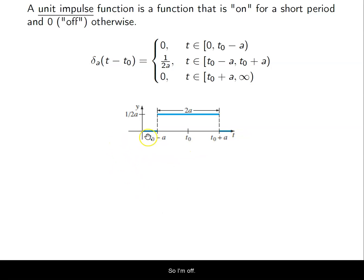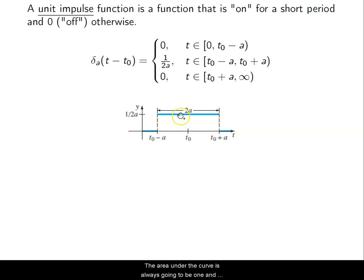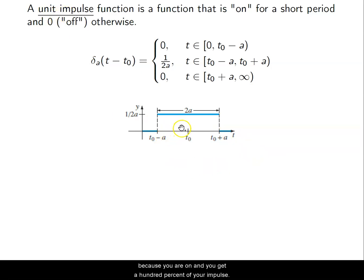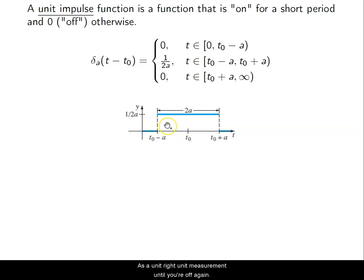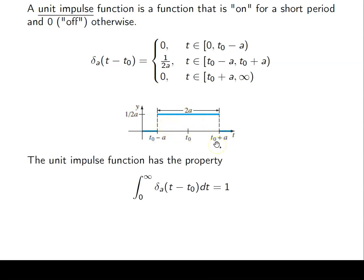So I'm off until I turn on. I'm on for a short period — the area under this curve is always going to be 1 — and then I am off. That's why it's called a unit impulse function: because you are on and you give 100% of your impulse as a unit measurement until you are off again.